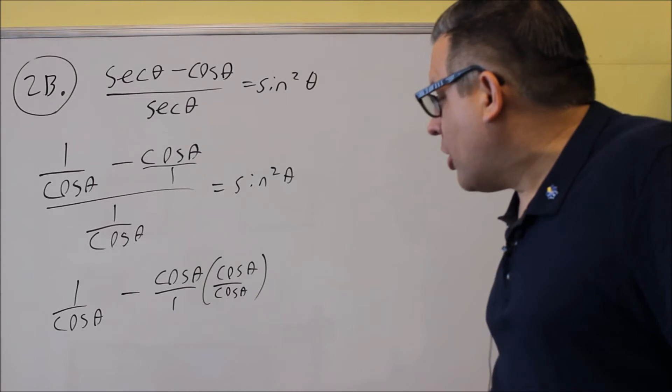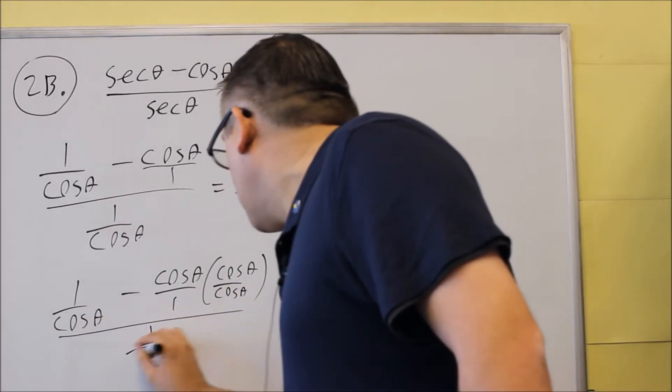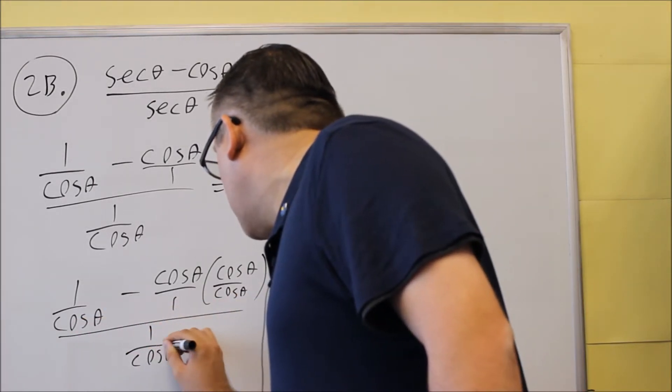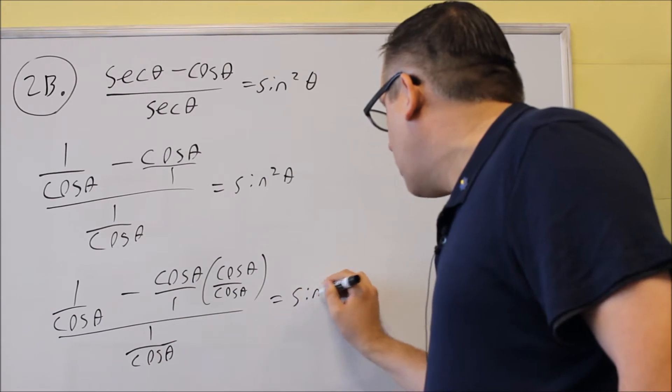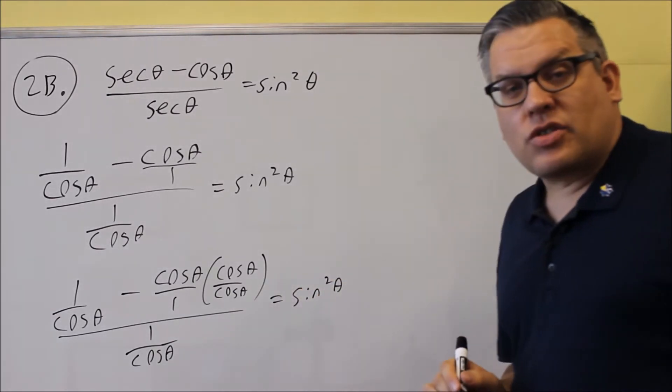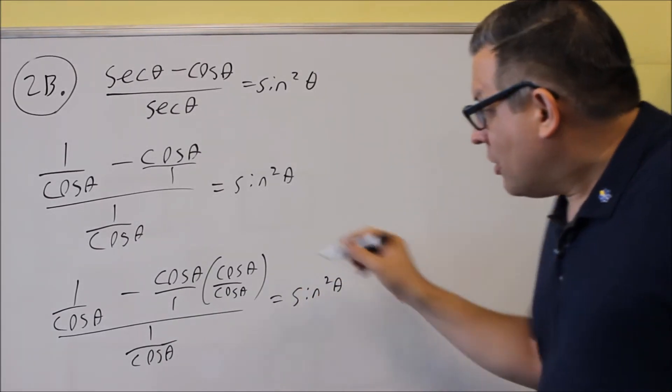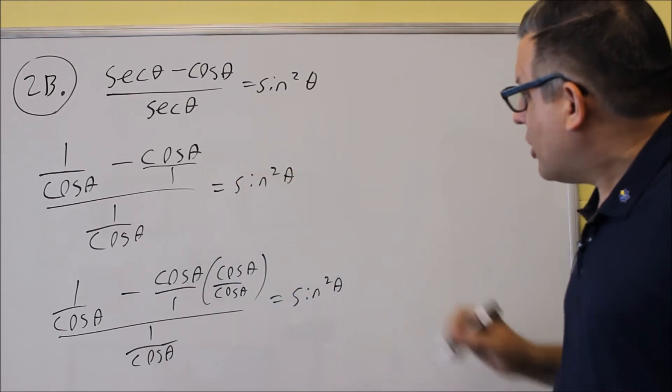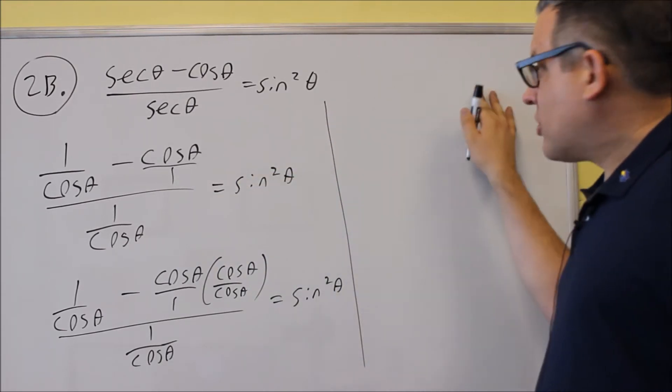So if I do that part, I still have on the bottom, don't want to forget about this one, 1 over cosine, and then eventually I want to have it equal sine squared. So I'm doing the common denominator step over there. So now let's come over to here.